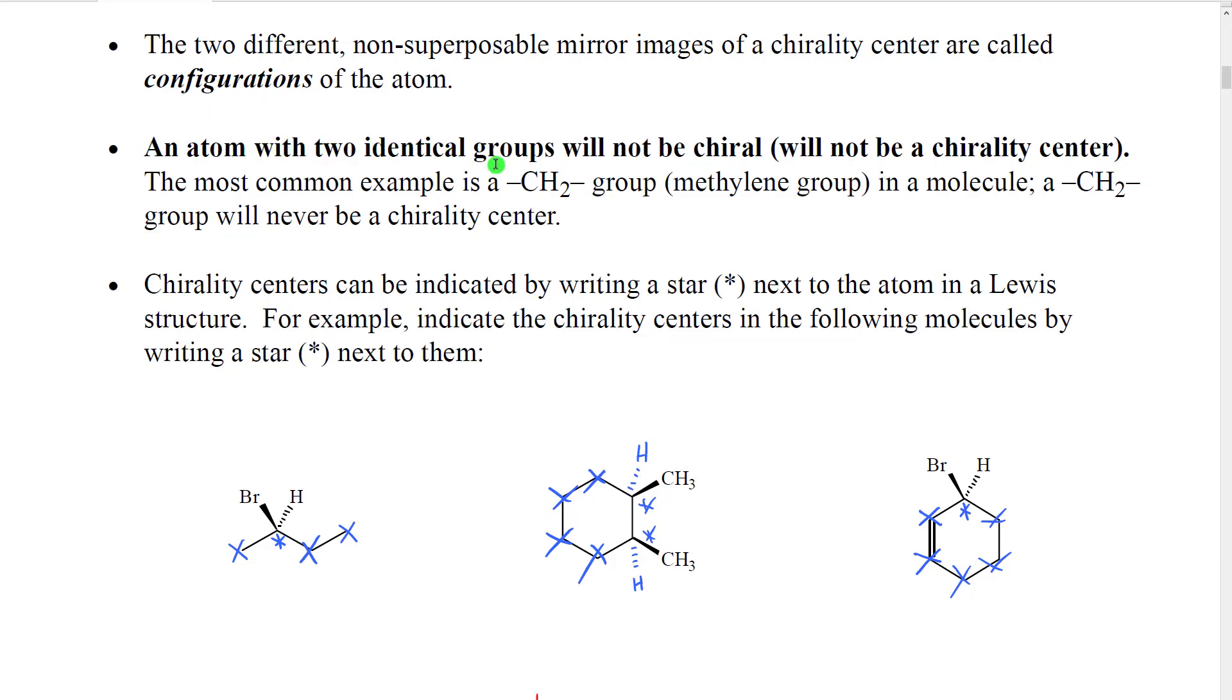An atom that has two identical groups will not be chiral. It will not be a chirality center. The most common example of this is a CH2 group which we call a methylene group. A CH2 group will never be a chirality center. This is going to be very important for us to know because many molecules have CH2 groups.